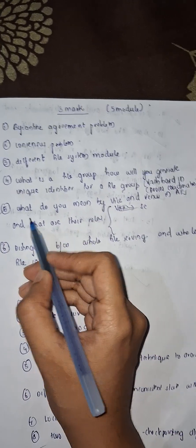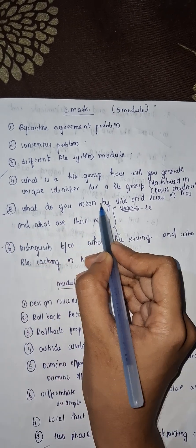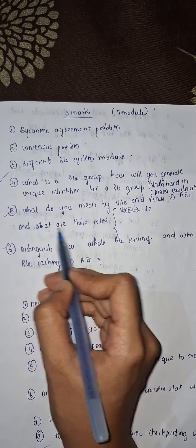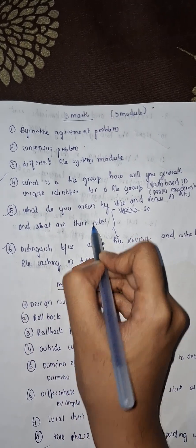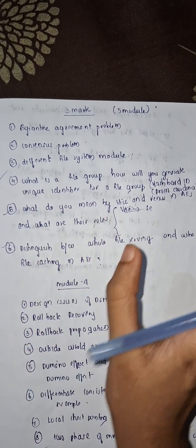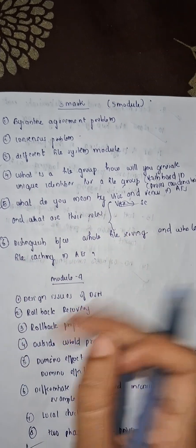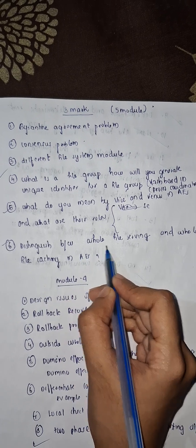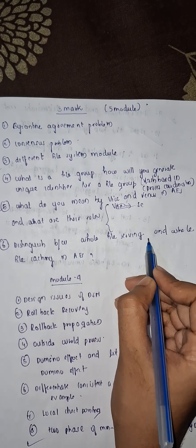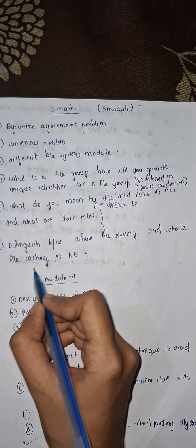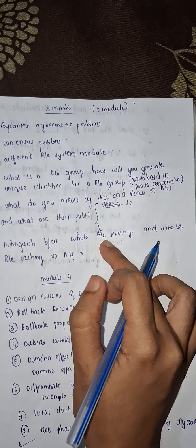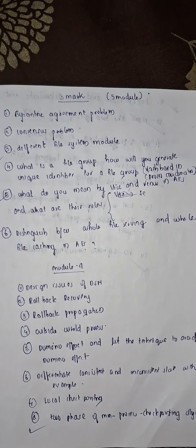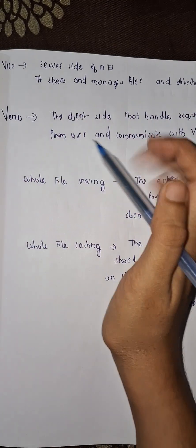What do you mean by Vise and Venus in AFS and what are their roles? This is the exam question. Distinguish between whole file serving and whole file caching in AFS.